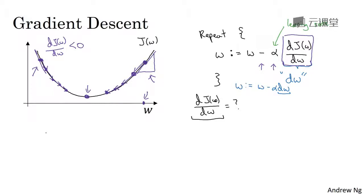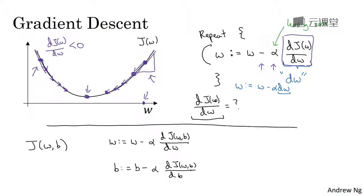So we wrote our gradient descent for j of w, if only w was your parameter. In logistic regression, your cost function is a function of both w and b. So in that case, the inner loop of gradient descent, that is this thing here, the thing you have to repeat, becomes as follows. You end up updating w as w minus the learning rate times the derivative of j of w b with respect to w, and you update b as b minus the learning rate times the derivative of the cost function with respect to b. So these two equations at the bottom are the actual update you implement.